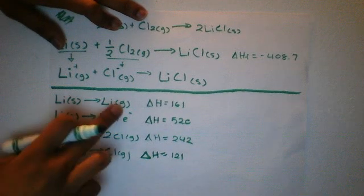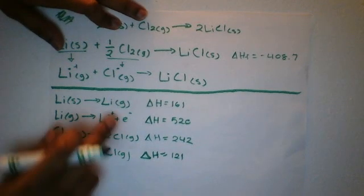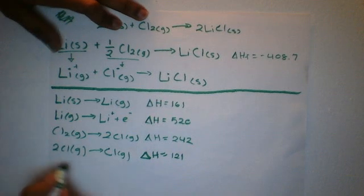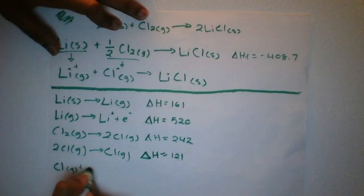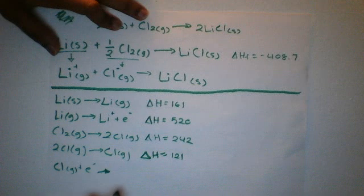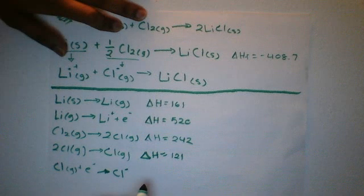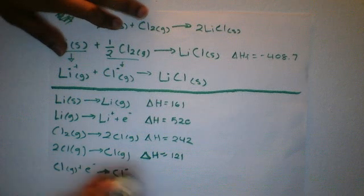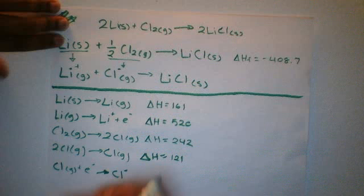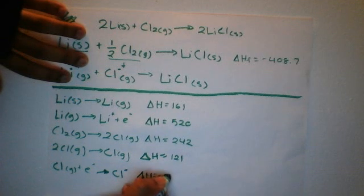Now we have chlorine gas, similar to how we had lithium gas. We turn chlorine gas into the chlorine anion: Cl gas plus one electron gives Cl-. Since we're adding an electron, we use the electron affinity value given for chlorine, which is negative 349 kJ. So delta H equals negative 349.